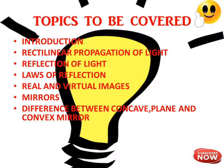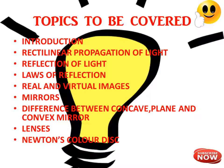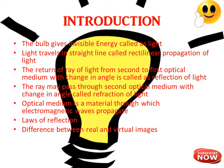Topics also include the difference between concave, plane, and convex mirrors, lenses, and Newton's color disc. For the introduction, I have already made Part 1 — please check that video so you will have a better conceptual understanding. For continuity, I'll give a brief glimpse: a bulb gives invisible energy which is called light, and light travels in a straight line, which is called rectilinear propagation of light.